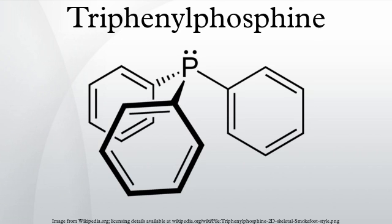PPh3 + CBr4 + R-CH2OH → OPPh3 + R-CH2Br + HCBr3. This reaction commences with nucleophilic attack of PPh3 on CBr4, an extension of the quaternization reaction.